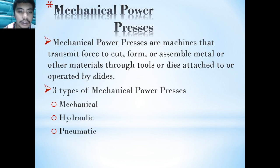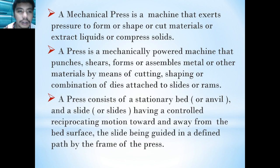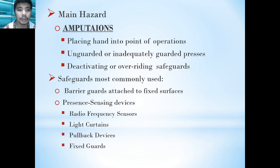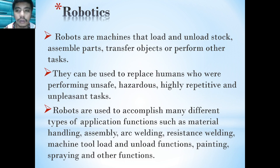Mechanical power presses are machines that transmit force to cut, form, or assemble metal or other materials using tools or dies attached to or operated by slides. There are three types: mechanical, hydraulic, and pneumatic. Major components include the frame, motor, flywheel, crankshaft, clutch, and brake. Major hazards include placing hands in the zone of operation and inadequately guarded or unguarded dies, and deactivating or overriding safeguards.